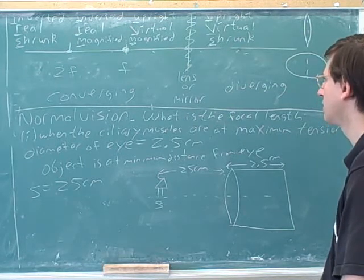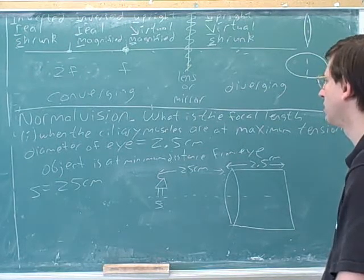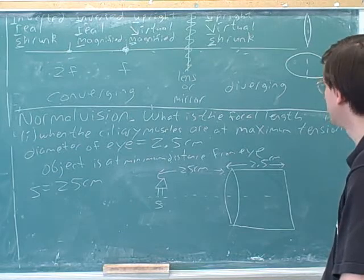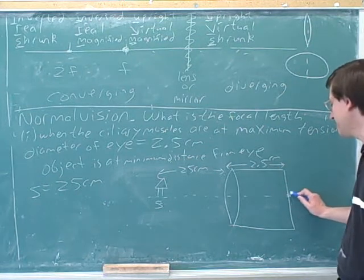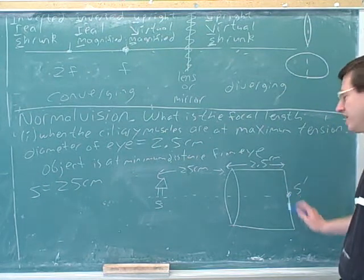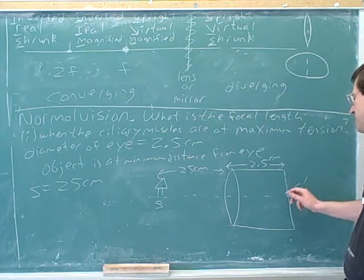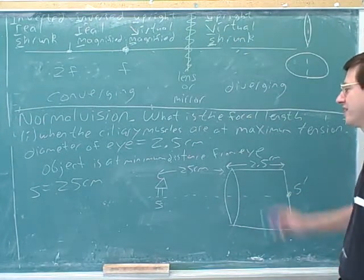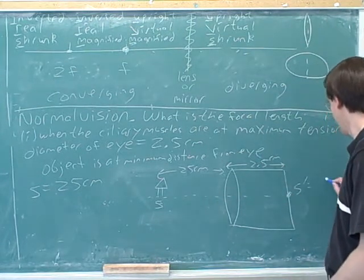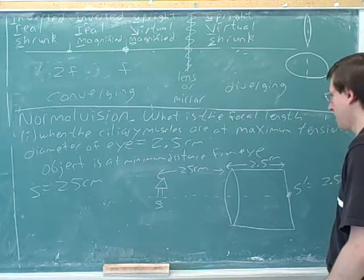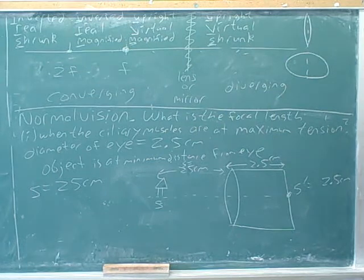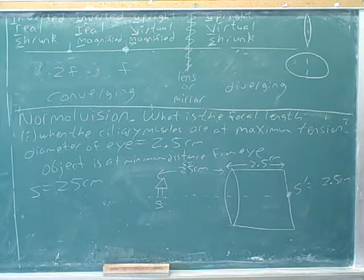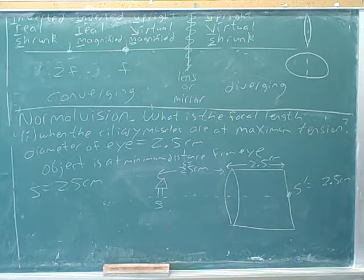So we're working this through step by step. So does that mean that the image distance would be 2.5 centimeters? Yeah. That's right. Yeah. What does this number represent? It's the image distance. Because here's where we want the image to be. Right? We want the image to be here. And the image distance is supposed to be how far the image is from the lens. That's good. That was what I should have said next. So if s is 25 centimeters, then s prime is 2.5 centimeters. That's the way to go. Okay. And then we can use the lens mirror equation.